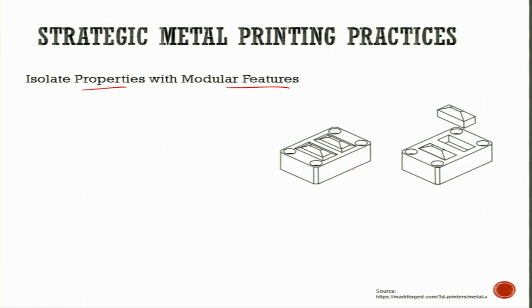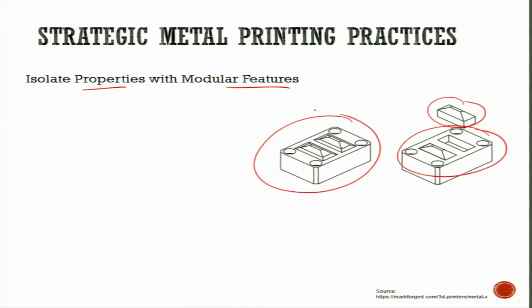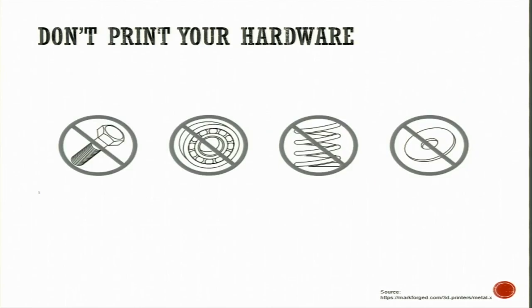It is also suggested not to print standard hardware like boards, bearings, springs, and washers — these are generally available in the library and are not recommended for direct printing. With this, the demonstration on MetalX 3D printing is completed. We have seen how to set the printer, how to use the Eiger software for printing, and general suggestions for printing, washing, and sintering. In the next week, we will discuss more on costing and safety features in metal additive manufacturing. Thank you.